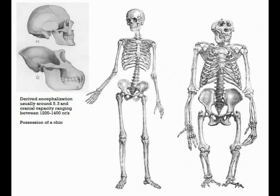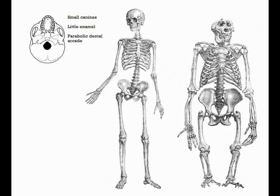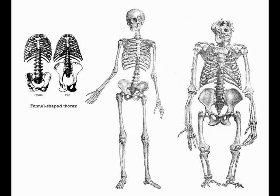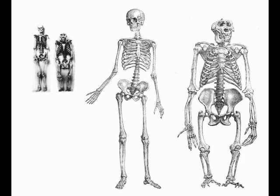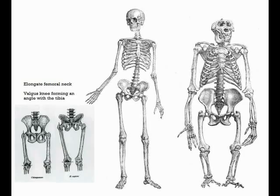Moving on, we'll now look at the specific set of morphological traits that make our species unique among other great apes. This includes having a relatively large brain, possession of a mental eminence, having small teeth, and various cranial and post-cranial modifications for obligate bipedalism, among others. These traits will become important when we examine hominin fossils to determine whether or not they are transitional between apes and humans.